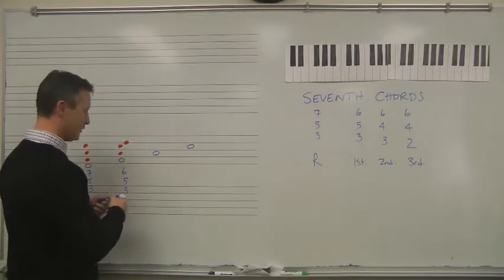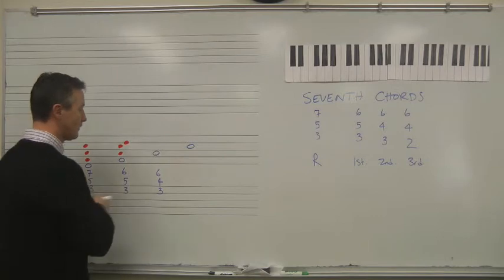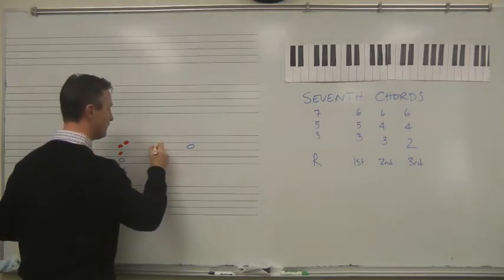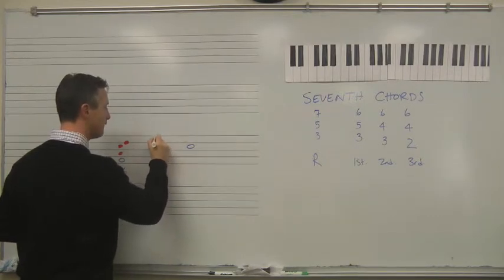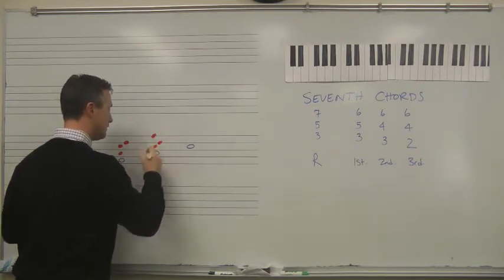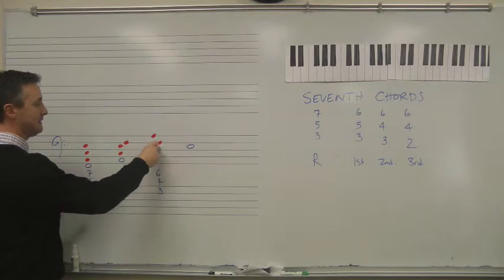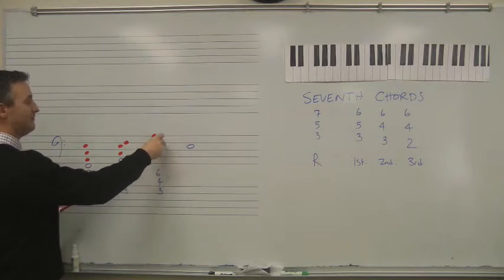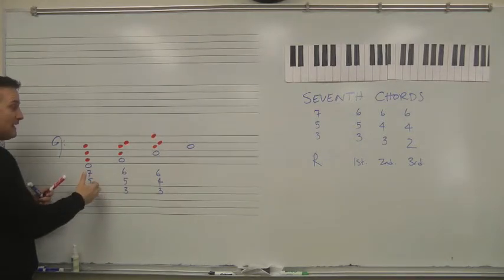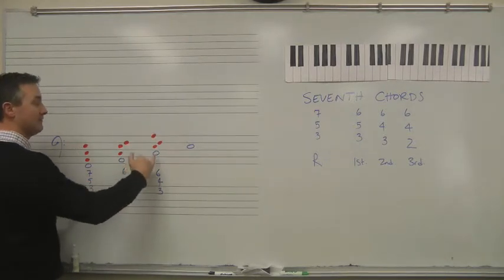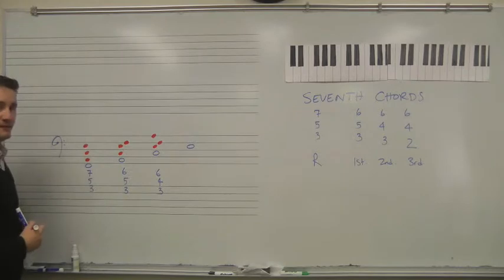Now we can logically go on and look at the next one: 6, 4, 3. And again, if I count up: 1, 2, 3. 1, 2, 3, 4. 1, 2, 2, 3, 4, 5, 6. All the same notes: F, A, C, and E. F, A, C, E. The same four notes that you have had from the very beginning, because now we have the same chord in second inversion, because the fifth of the chord is the bass note.